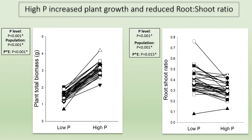So what are my findings? The graphs I'm presenting are reaction norm plots where each line represents a distinct population, showing how more than 30 populations responded to low and high phosphorus application in terms of plant growth and root allocation. We found that high phosphorus increases plant growth in general and reduces root-to-shoot ratio compared to plants under low phosphorus. This is in line with our current knowledge that phosphorus application tends to stimulate plant growth and plants under phosphorus limitation tend to invest more into roots. The population term is significant in both cases, meaning plant biomass and root allocation differ significantly among populations in both environments.